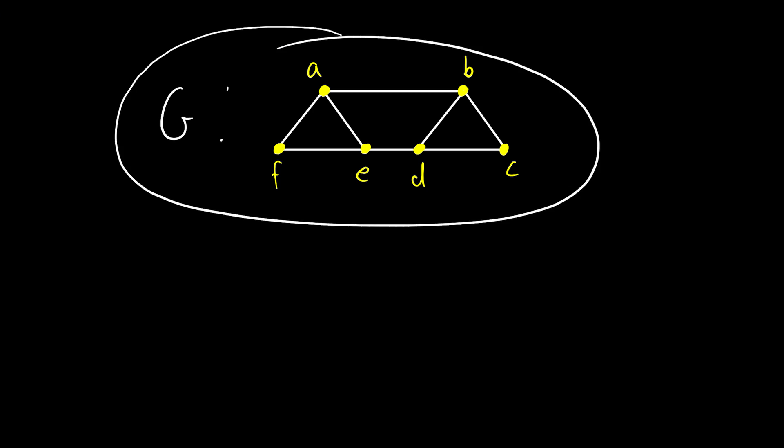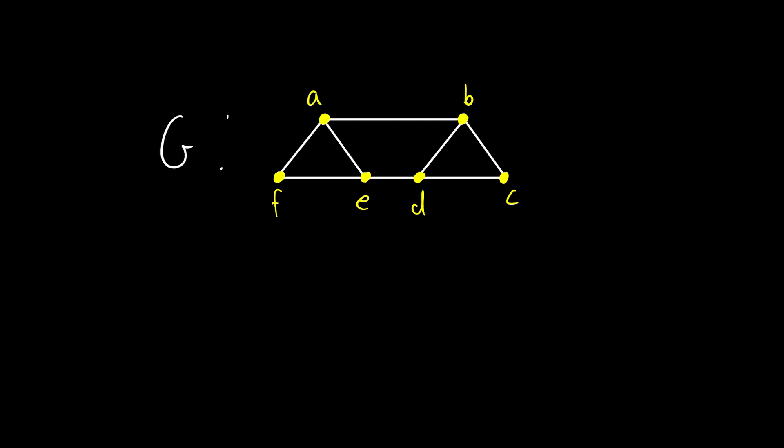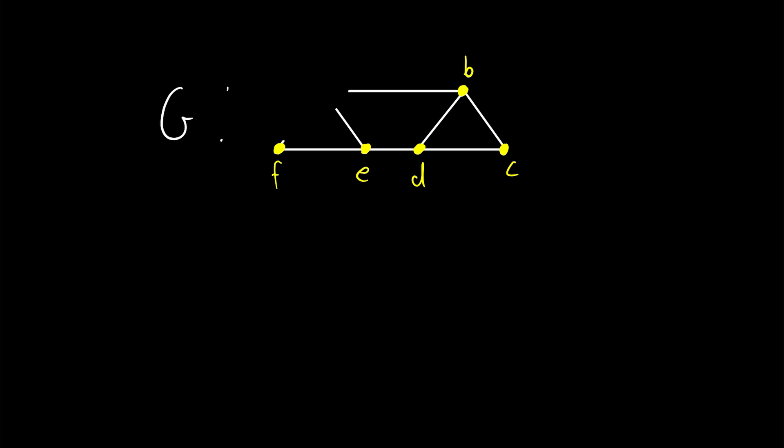Again, this graph is pretty clearly connected. It also turns out our graph G has no cut vertices. If we delete A, we see that the resulting graph is connected. If we delete D, we see the resulting graph is still connected. Delete F, it's still connected, and so on.